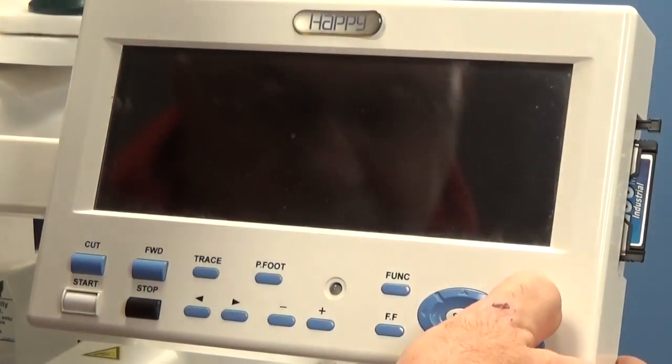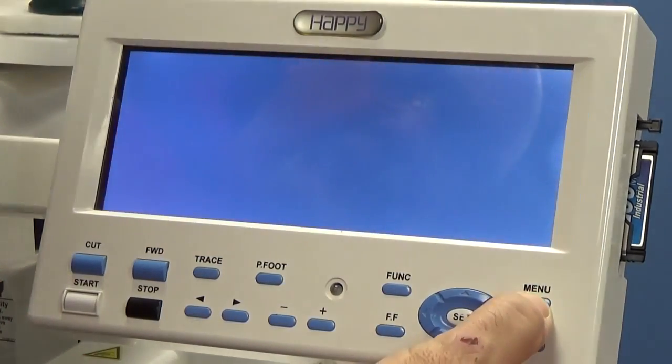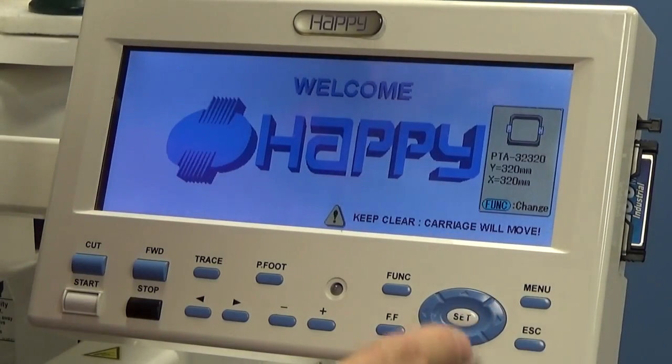So now we've powered off the machine. Let's hold our menu button in again. Put the power switch on. Keep holding the menu button in again. This is for maintenance mode. When you see the screen, let go. Set.